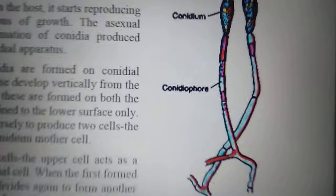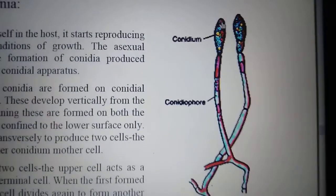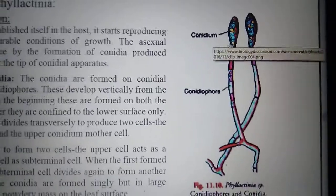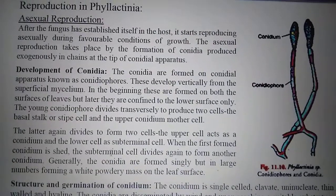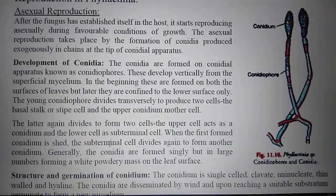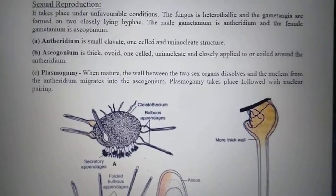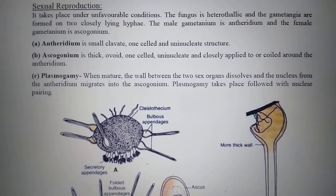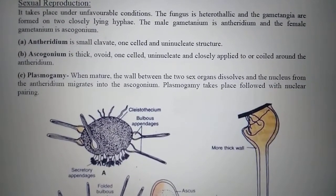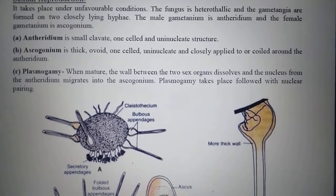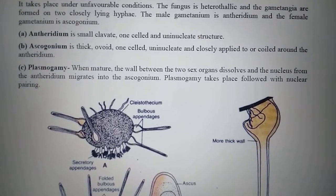We will now study Phyllactinia as a genus of the Erysiphales order. Phyllactinia penetrates deep tissue and has both superficial mycelium and endophytic mycelium visible via the stomata. Sexual reproduction takes place under unfavorable conditions. The fungus is heterothallic and gametangia are formed on two closely lying hyphae. The male gametangium is the anthridium and the female one is the ascogonium. The anthridium is small, clavate, one-celled and uninucleate. The ascogonium is thick, ovoid, one-celled, uninucleate and closely applied to or coiled around the anthridium.